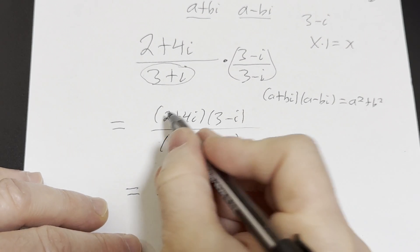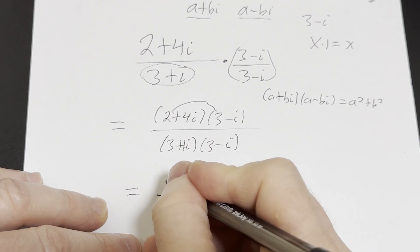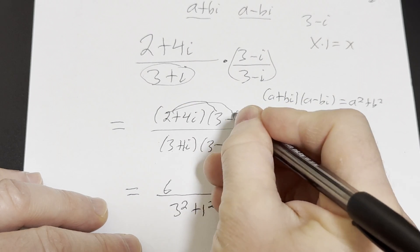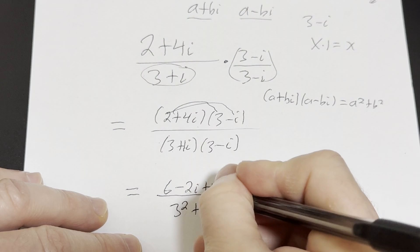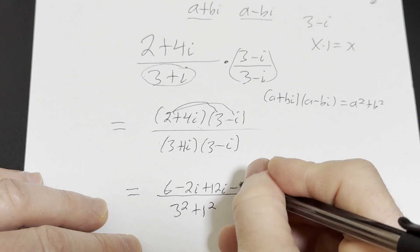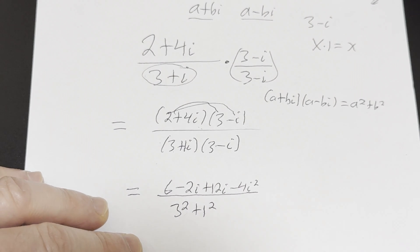In the numerator we can distribute 2 times 3 is 6. 2 times minus i is minus 2i. 4i times 3 is 12i. 4i times minus i is minus 4i squared. Just like that.